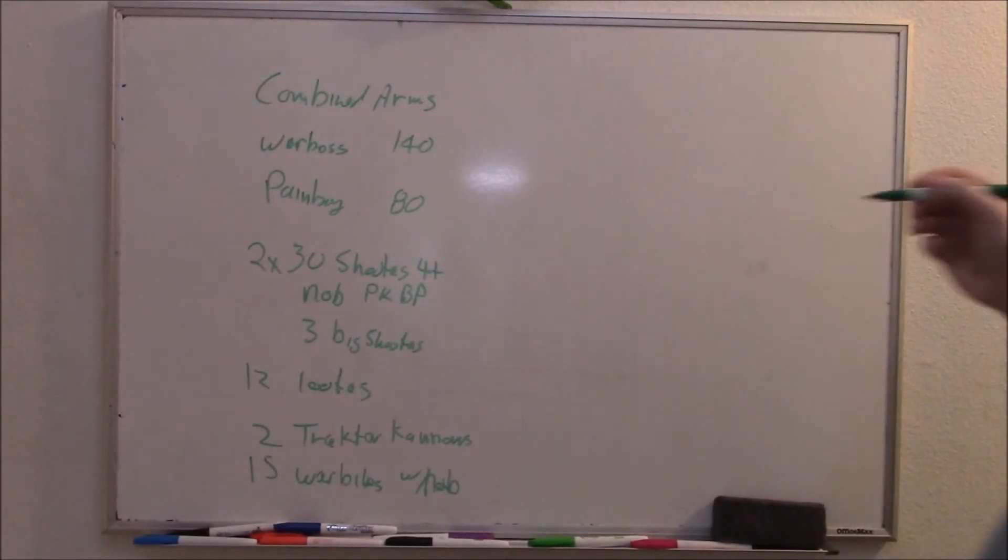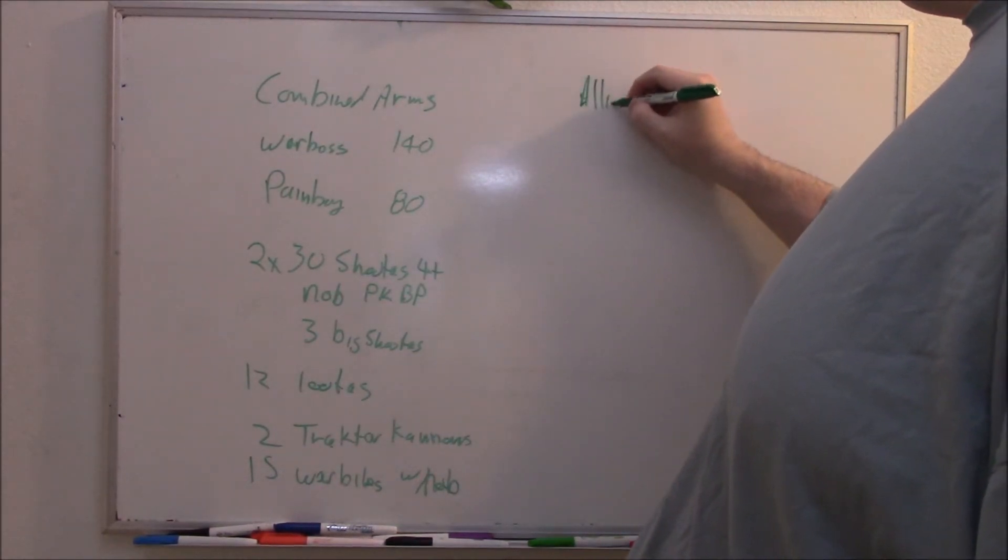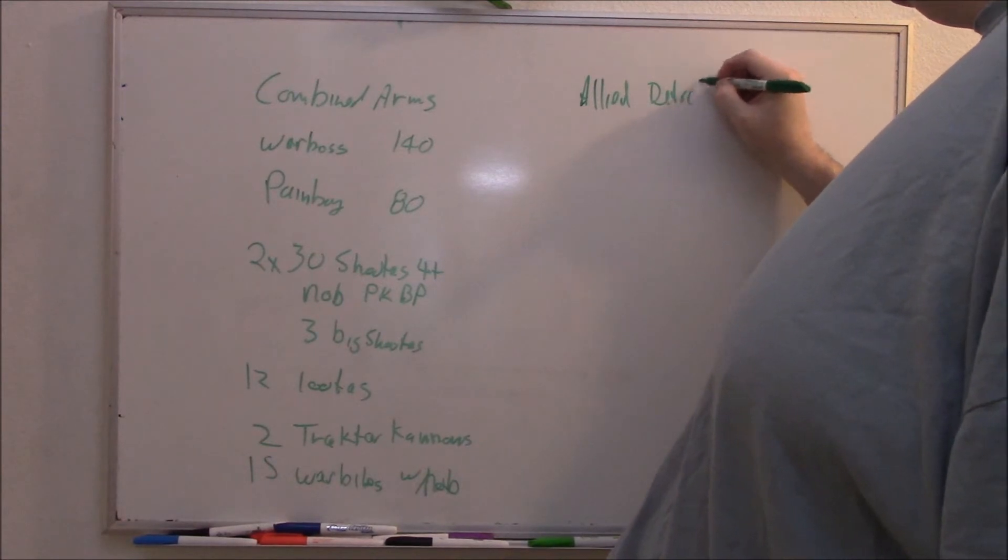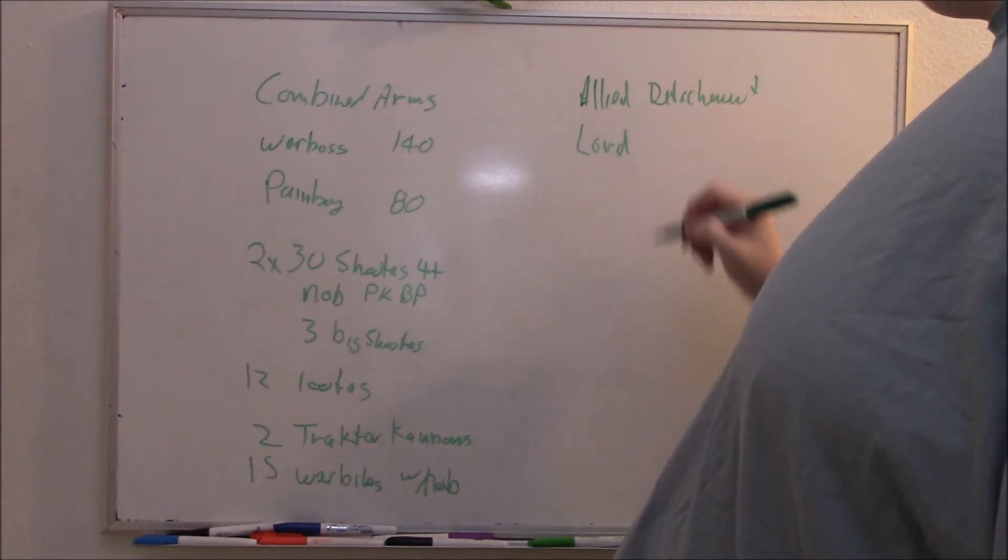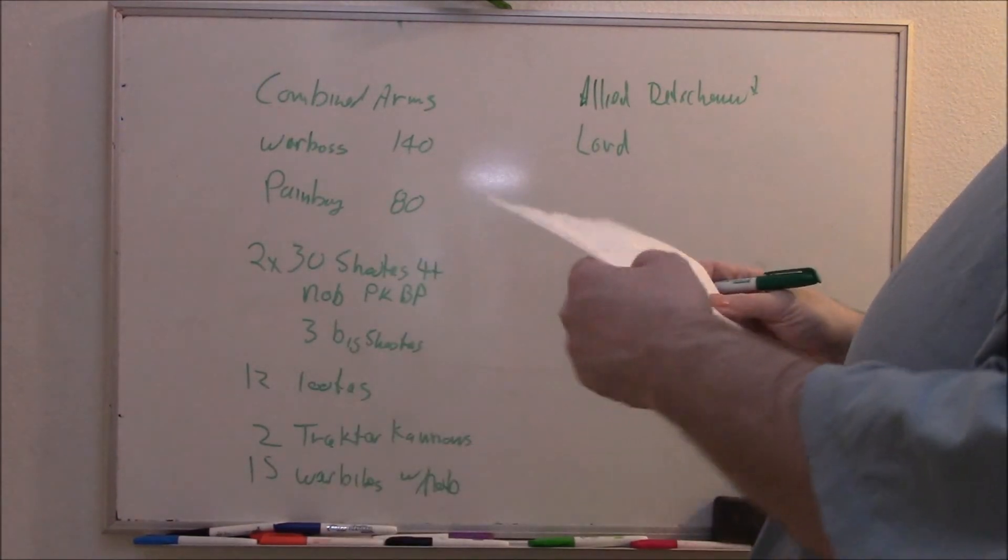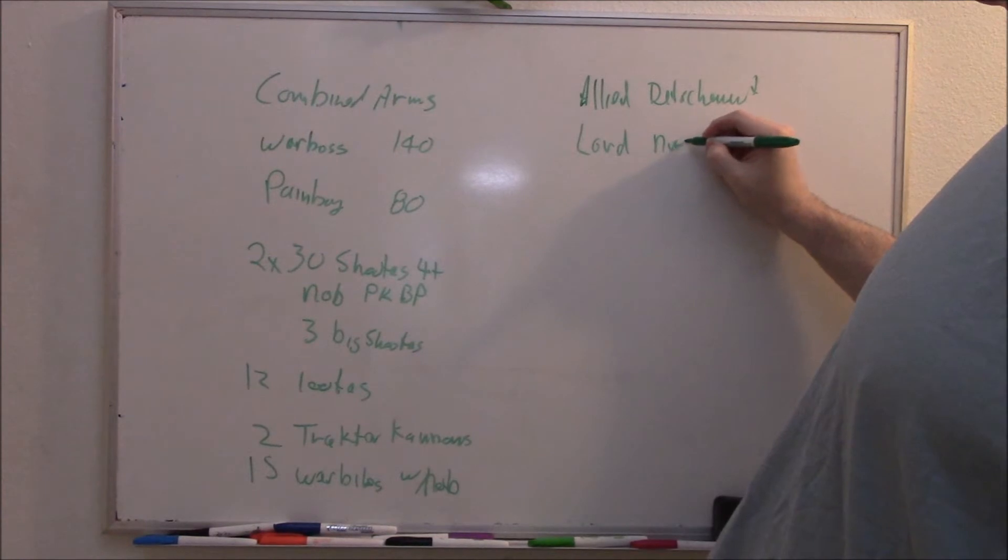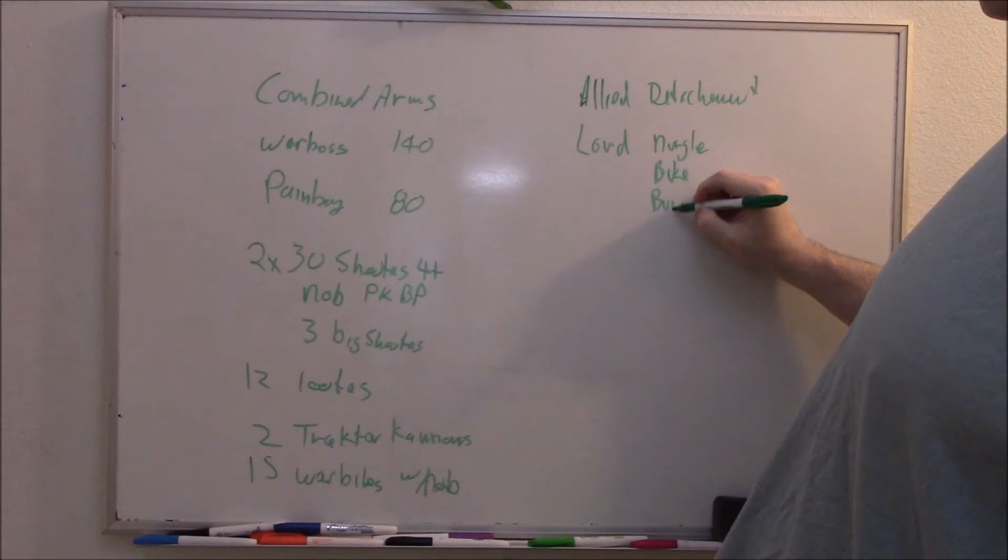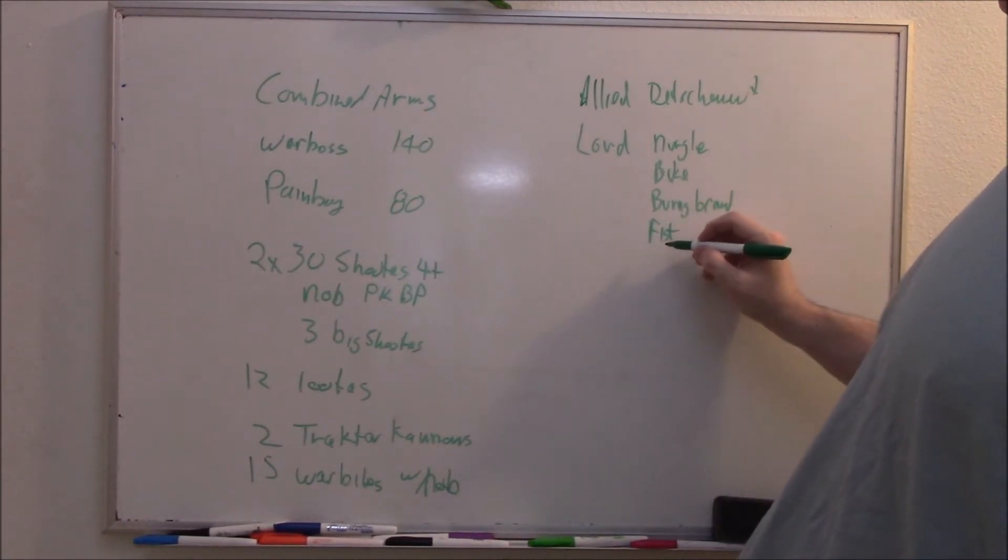So for Chaos, we're going to run an Allied detachment, so they do gain Objective Secured. We're going to have a Lord on a bike, and we're going to give that Lord Nurgle, the Bike, the Burning Brand, the Fist, and Sigil Corruption for the Invul Save.